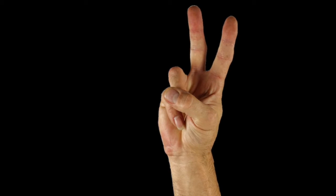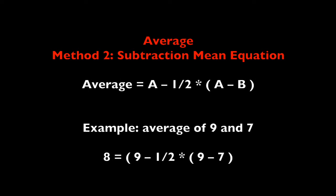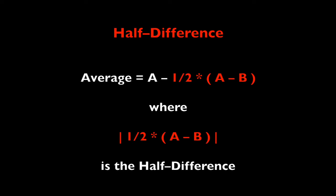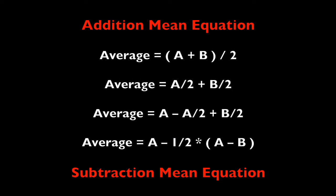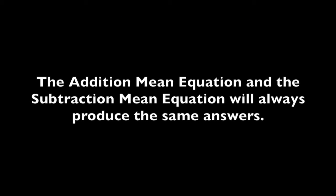There are two ways to find an average, which in mathematics is called an arithmetic mean. The first is the addition mean equation: (a + b) / 2. The second, which is not as well known, is called the subtraction mean equation: a minus one half of the difference (a minus b). The addition mean and subtraction mean equations are equivalent — they always produce the same answer. I'm going to use the subtraction mean equation, which will help us later explain aspects of Einstein's work. Remember, an average is an average; it doesn't take on magical properties just because we find it using the subtraction mean equation.